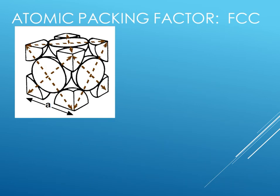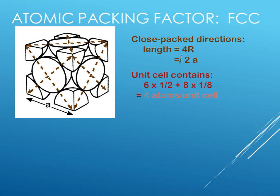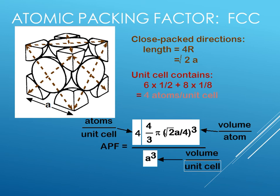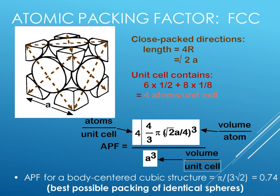Talking about APF of face-centered cubic. Here, the close packing length is root 2 into a. There are 4 atoms per unit cell. So the formula becomes 4 into 4 upon 3 pi r cube where radius value is root 2 a upon 4 upon a cube. The APF value comes out to be 0.74. Packing efficiency is 74 percent. The void space is found to be 26 percent. If you compare all the values of packing efficiency, face-centered cubic has maximum efficiency and minimum void space.